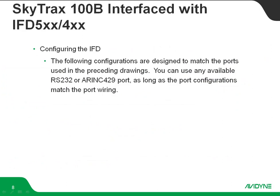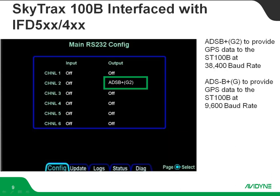Now I'm going to show you the configuration settings on the IFD side. Keep in mind that the settings in this video match the drawings we just looked at as far as ports go — if you use different ports, apply these configuration settings to those ports instead. For the ADS-B plus G2 GPS position source out to the Skytrax 100B, we put it on port 2 output at a 38,400 baud rate. If you use ADS-B plus G instead, that's a 9,600 baud rate — the installation manual calls out the G2 setting and the higher baud rate.